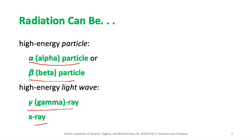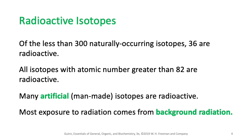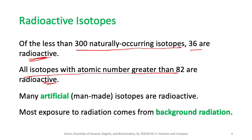Of the fewer than 300 naturally existing isotopes, 36 are radioisotopes — meaning they radiate energy in the form of radiation. Also, all isotopes with an atomic number greater than 82 are radioactive. Some are naturally radioactive isotopes and some are artificial, meaning humans created them.